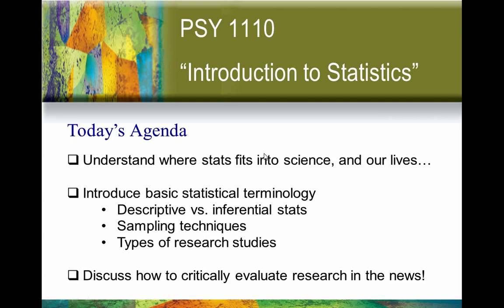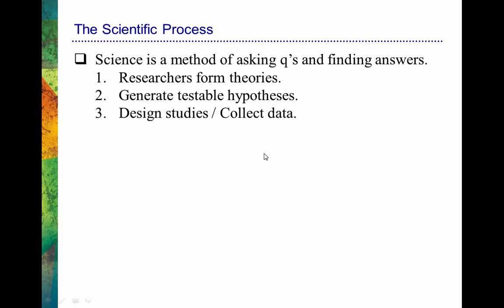Let's talk about the scientific process. Science really is just some method of asking questions and finding answers. I'm a psychologist, and let's say I have this theory that depression is somewhat related to brain chemistry. From that theory I can generate some testable hypotheses to see if there's support for it. That's what makes something scientific — otherwise we're just talking about philosophy.